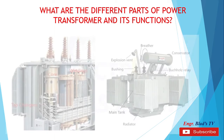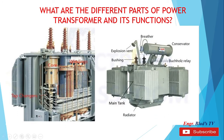In this picture we can see inside the transformer: the core, the windings, and the tap changer. Also inside the transformer, the transformer oil is located. Here we can also see the primary bushings and the secondary bushings. In this picture we can also see the main tank, the radiator or cooling fins (sometimes called cooling tubes), the explosion vent, breather, the conservator, the Buchholz relay which is located between the conservator and the main tank, and the bushing.